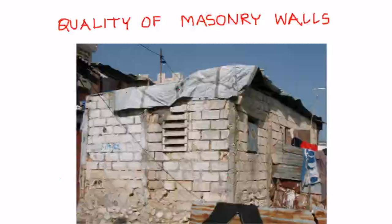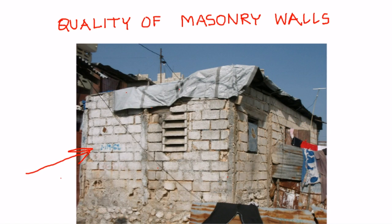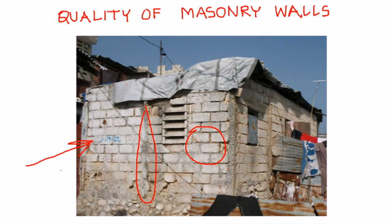Quality of masonry is essential for good seismic performance of any masonry construction, including confined masonry. This includes quality and strength of masonry units, types of units, quality of mortar, and quality of masonry construction. This photograph shows a confined masonry building typical of Haiti, and this type of construction was affected by the 2010 earthquake of magnitude 7, which killed 300,000 people. One of the key reasons for the very high death toll was poor strength of masonry construction. The masonry was done using very low strength concrete blocks, and even the quality of concrete in tie columns was extremely poor.